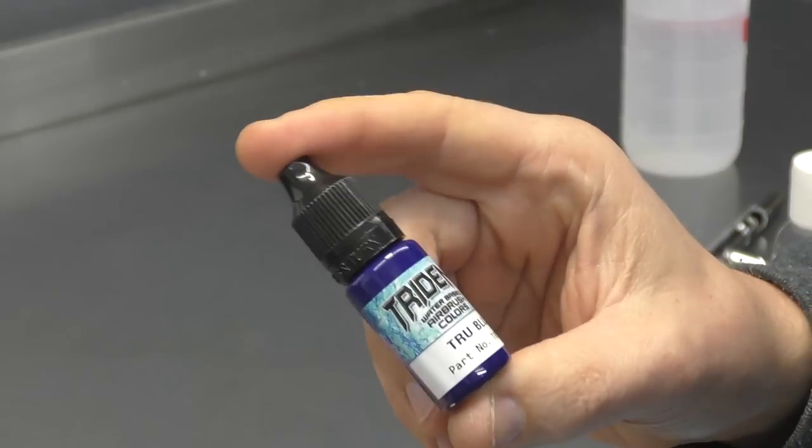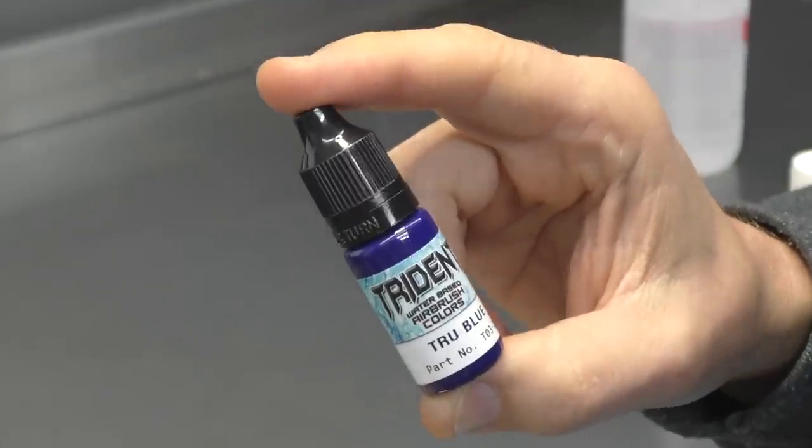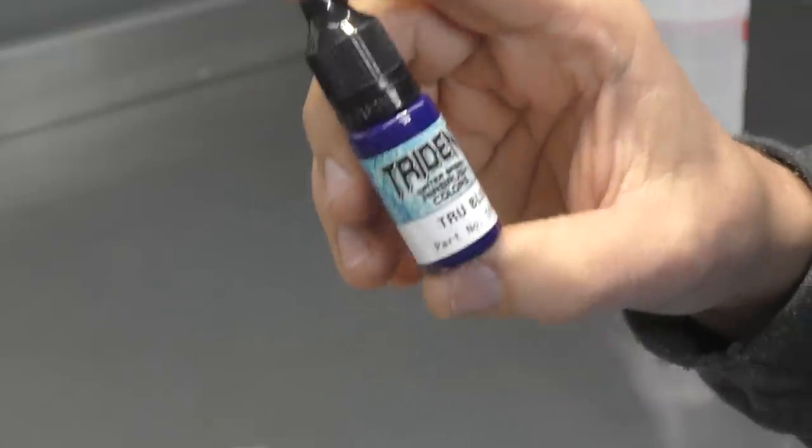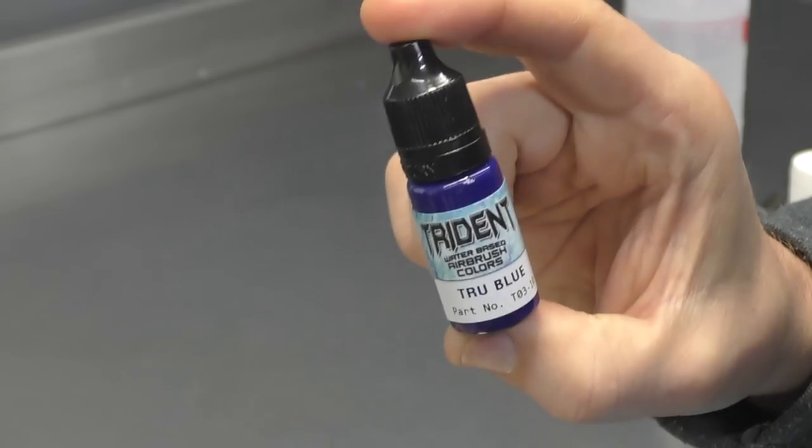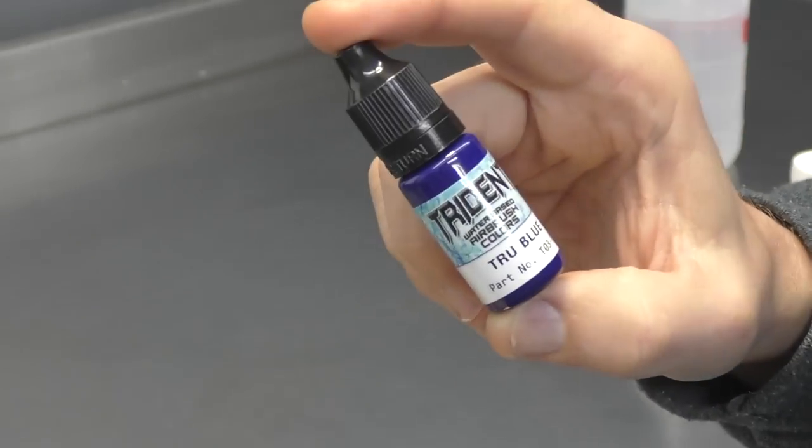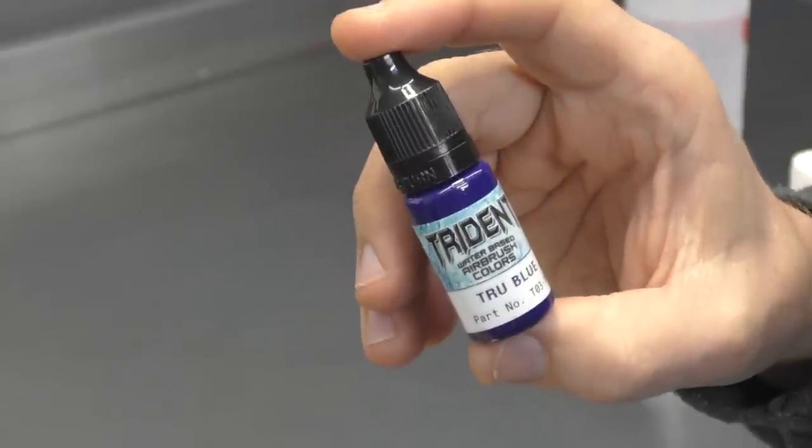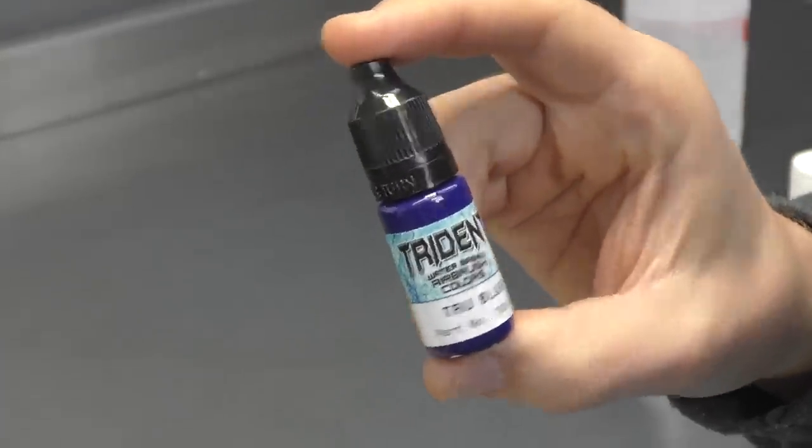So if you've watched any of my videos before, you know that I pretty much use Trident Airbrush colors for the majority of my artwork. I also use Createx illustration colors for certain projects. Now the thinning tips that I'm going to give you today are going to focus on those products. I'm not going to show you the Createx because I use the same ratios for that brand of paint, but I am going to show you how I mix up my Trident paint.